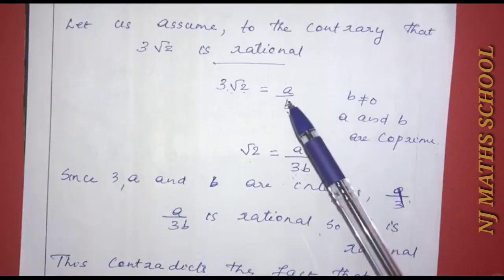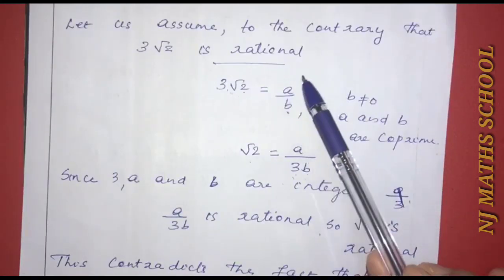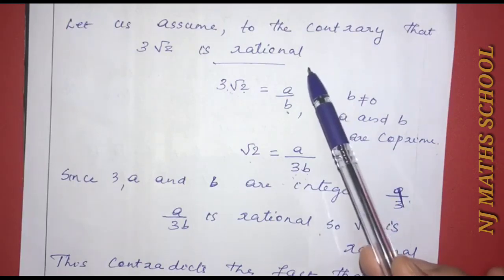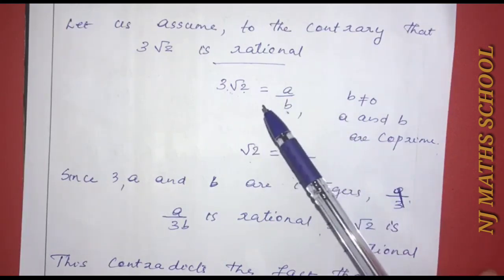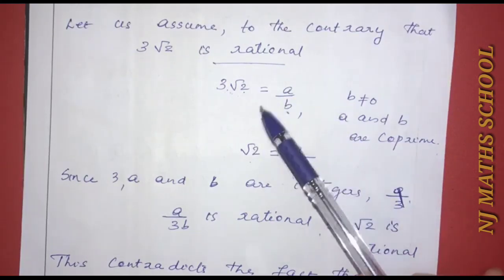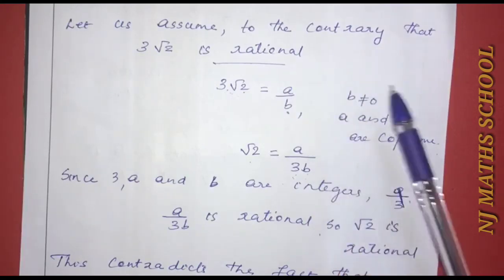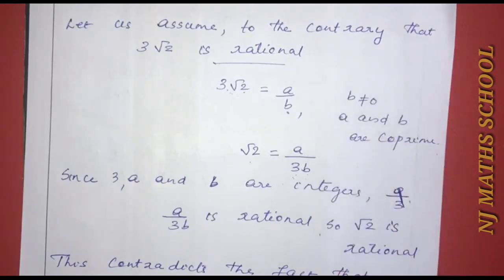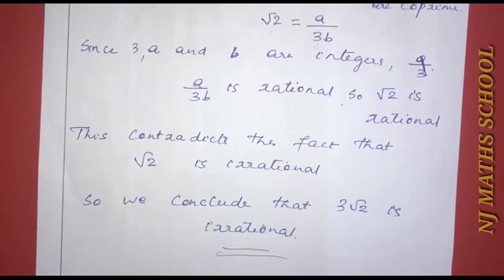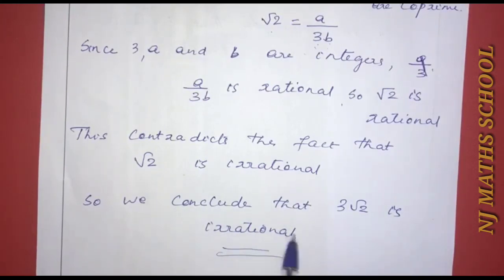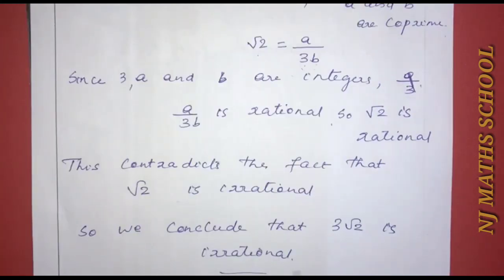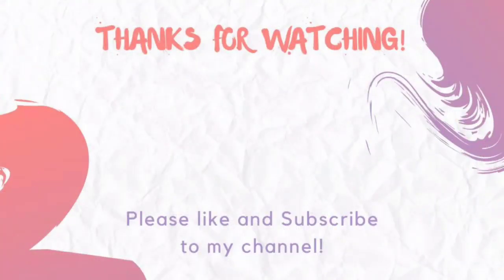But this contradicts the fact that root 2 is irrational. Therefore, our assumption was wrong, and we conclude that 3 root 2 is irrational.